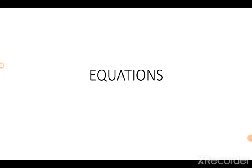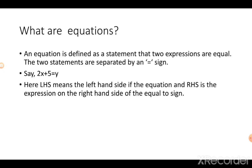Welcome to your class on mathematical tools. Today we are going to discuss a basic tool that we are going to use and come across a lot throughout our three-year course in economics: equations. An equation is a statement which says that two expressions are equal. These two expressions are separated by an equal to sign. For example, 2x plus 5 equals y. On the left hand side of the equal to sign is the expression 2x plus 5, called the LHS, and on the right hand side, the RHS, is the expression y.